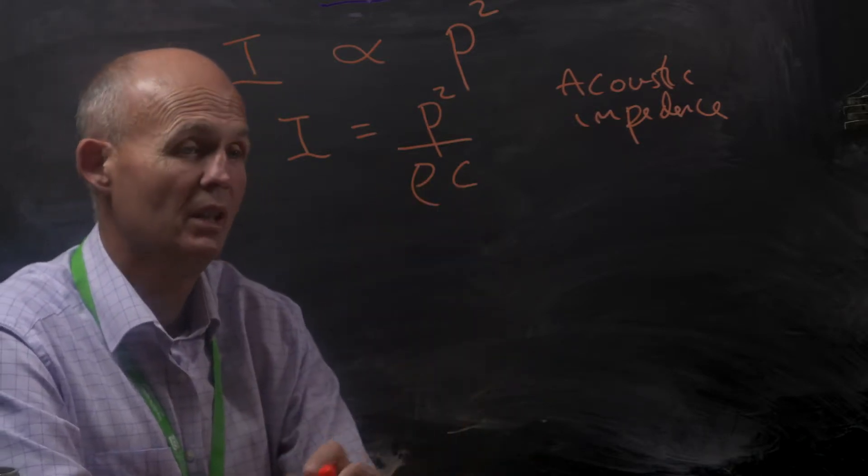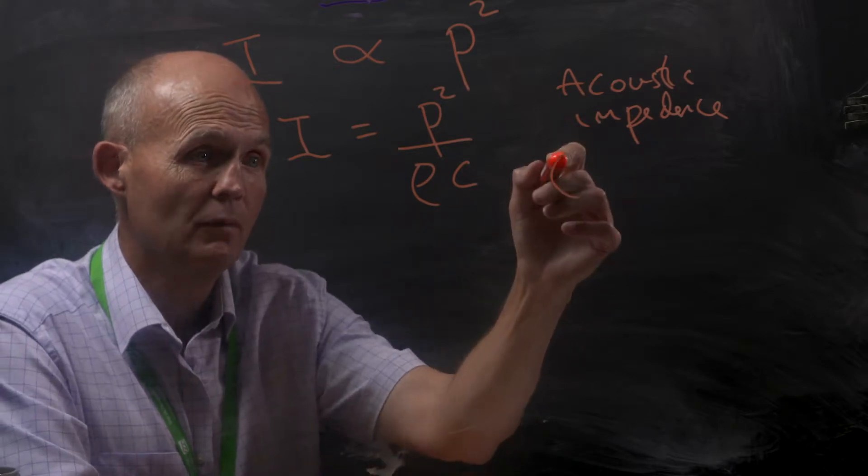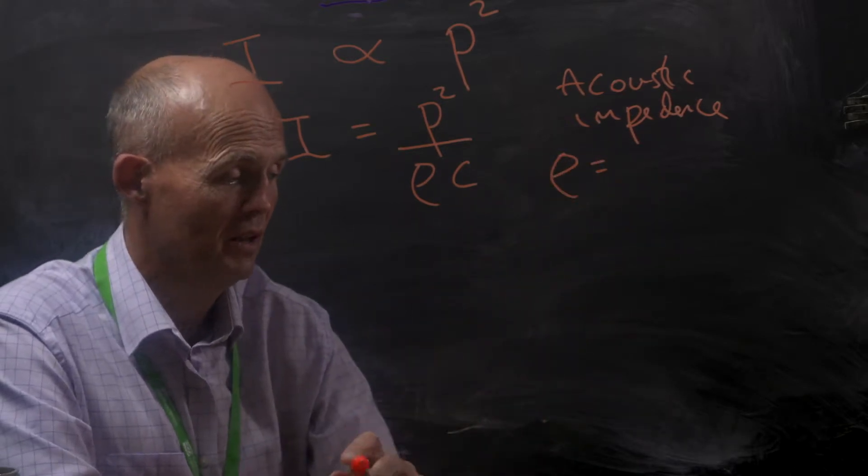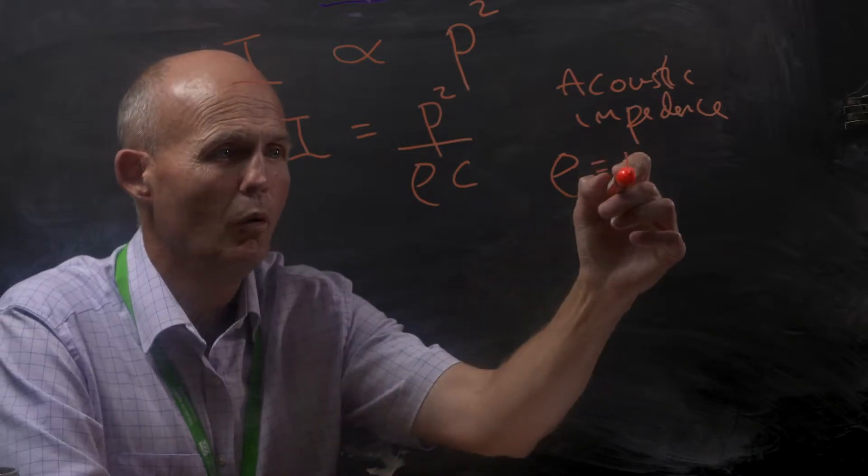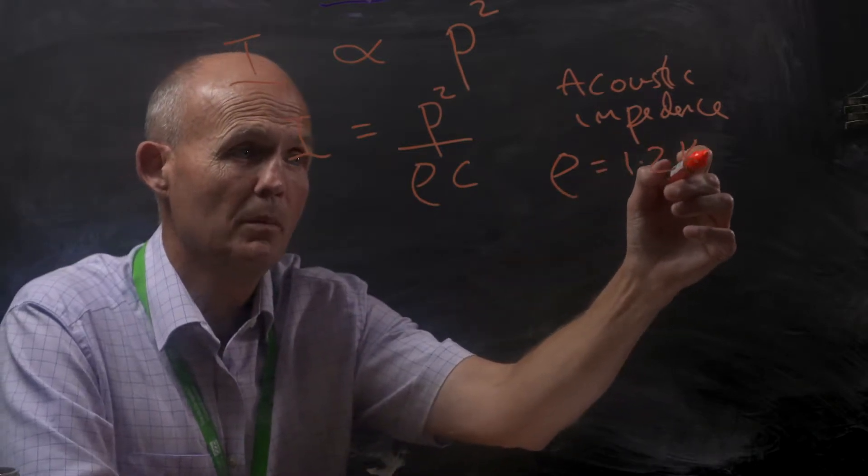Two important characteristics here is the density of the air, which is rho, and that is a figure of about 1.2 kilograms per meter cubed.